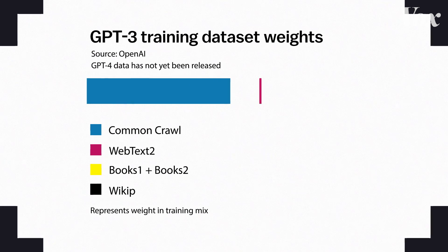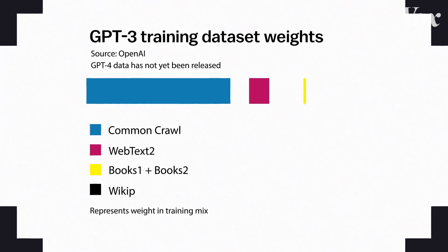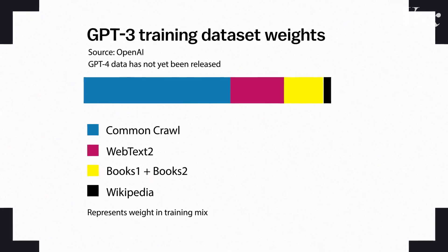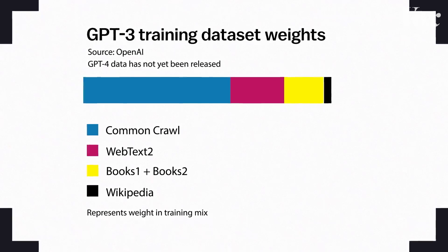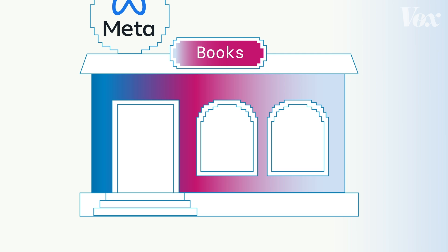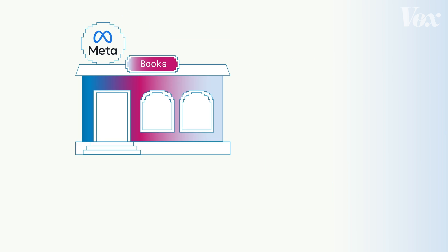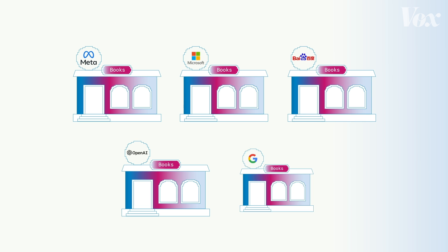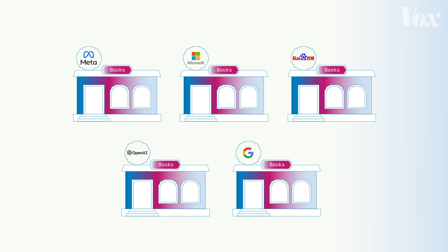Common Crawl is just a percent of what GPT-3 was trained on. We don't know the details about GPT-4, and that means a lot of other stuff went into this language model that we just don't know about. Right now, all these bookstores are actually run by Meta, Microsoft, Baidu, OpenAI, or Google. They decide which books go in there and don't tell anyone where they came from or who wrote them.